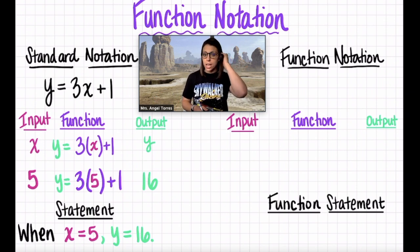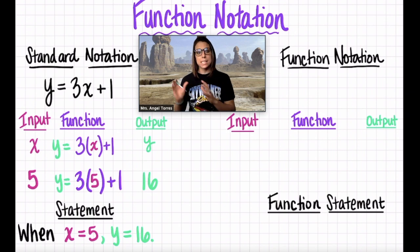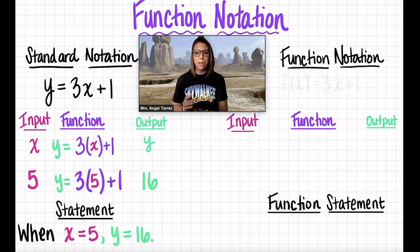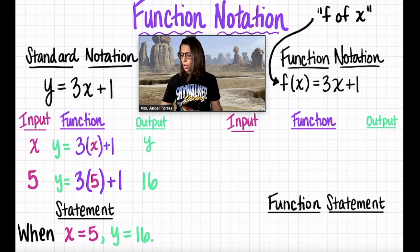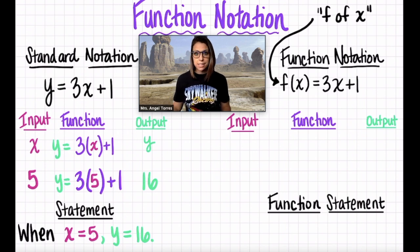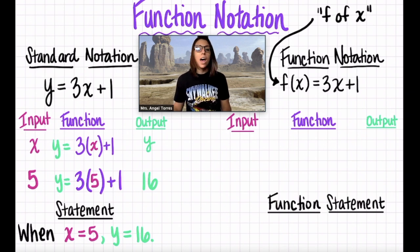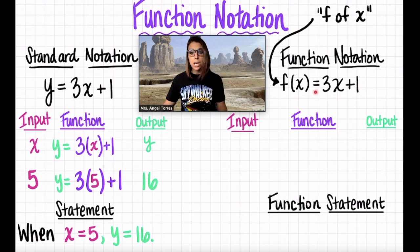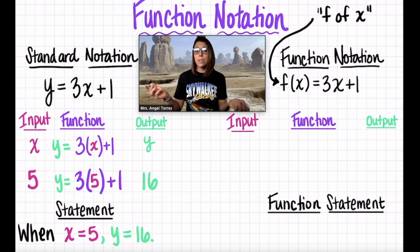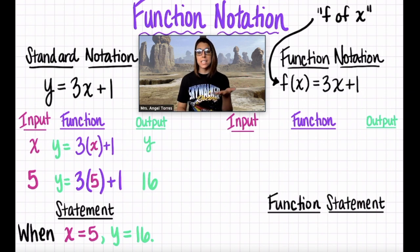Now let's take a look at function notation. It can be used for the exact same purpose — taking your inputs, plugging them in, and generating your outputs — it just looks a little funky. I'm going to read this out loud, and I want you to read it out loud with me. We read this as f of x. Say that three times: f of x, f of x, f of x. Not f times x, not f parentheses x. This is called function f. There could also be other functions named function g, function h, function i. We'll look at those in the next video.